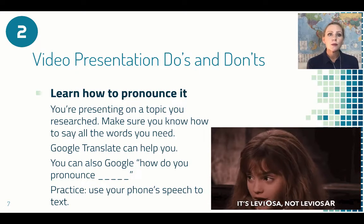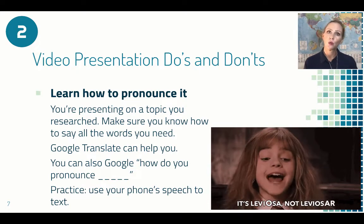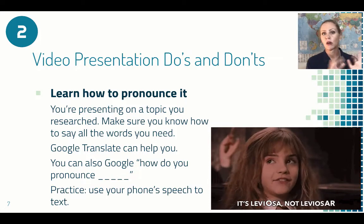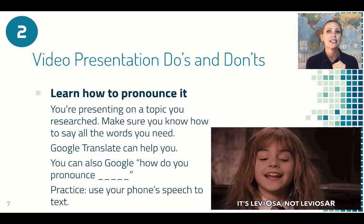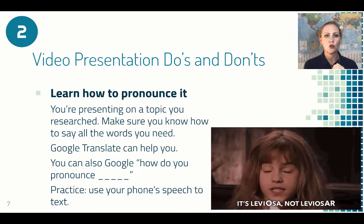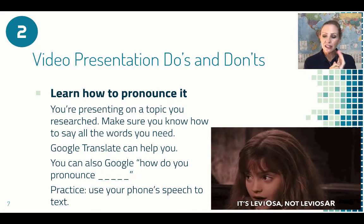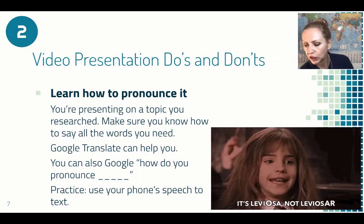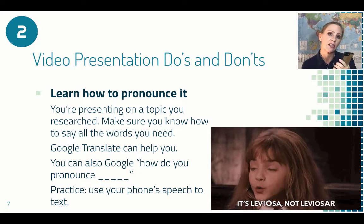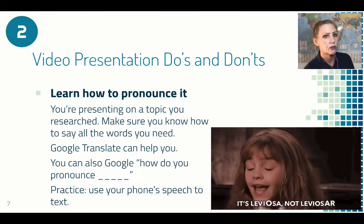Tip number two is learn how to pronounce it. You did the research and you know the words you need to use. Use Google Translate or Google 'how do you pronounce' and the word to help you learn the pronunciation. Make sure you pronounce everything correctly. You can also use your phone's speech-to-text — talk to your phone, and if it types it correctly, then you're probably pronouncing it well.